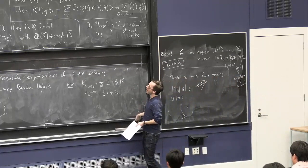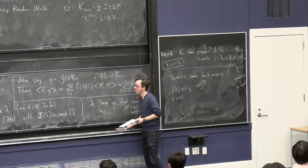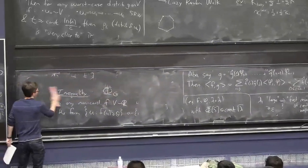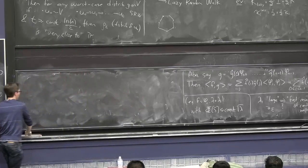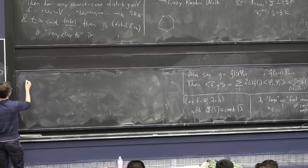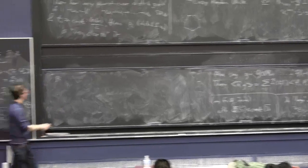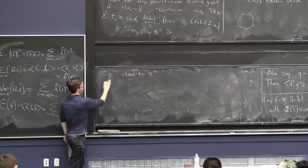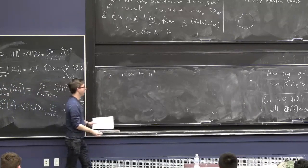To prove this theorem, we need a brief digression into a favorite topic: what's a good way to measure how close one probability distribution is to another. We'll just do a brief version here. In this theorem, we're analyzing rho_i, the distribution of the random walk after i steps, and we want to know what it means for rho_i to be close to pi.